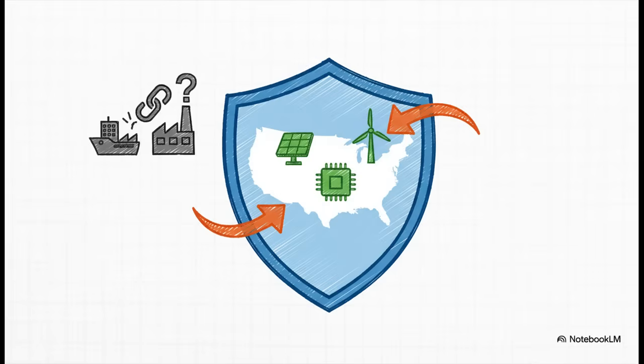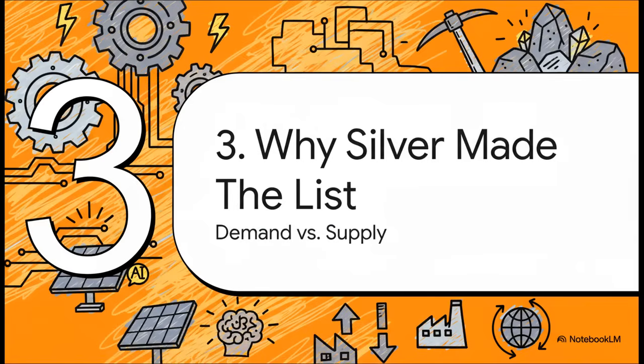At the end of the day, this list is a strategic tool. The whole reason the USGS put it together is to spot and defend against supply chain threats, especially from foreign countries. This is all about securing the raw materials we need to build our future. So why silver? And why right now? What finally pushed it over the edge and onto this super exclusive list?